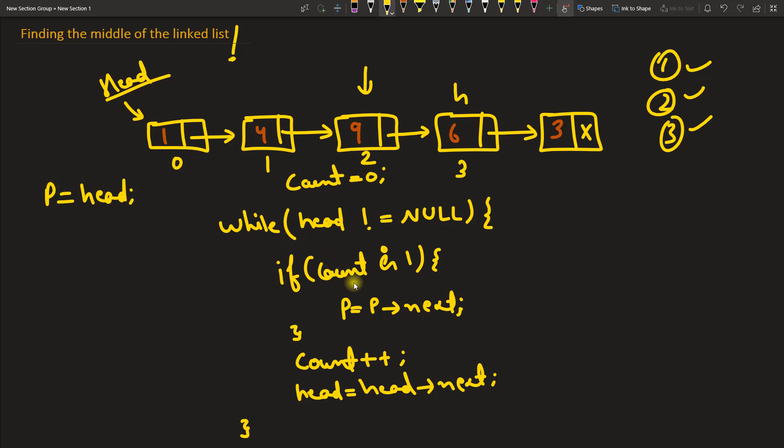But p will move conditionally, meaning if count is an odd number, meaning if head is at this location, then only we will move p. So when this head would reach the end, that time p would reach here with the help of this count. This is not so great a solution, but this is also one of the solutions.